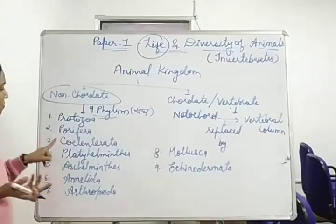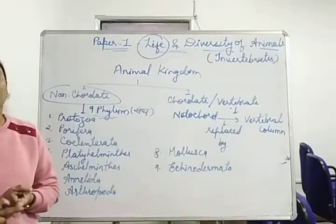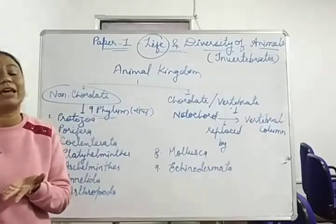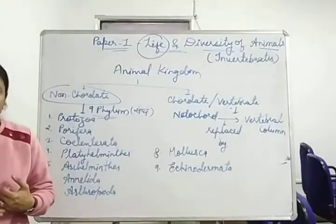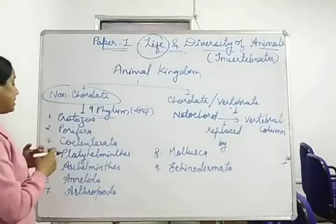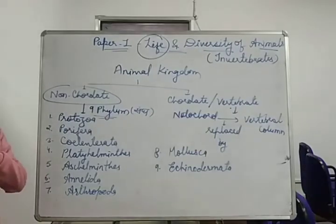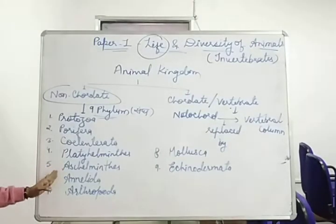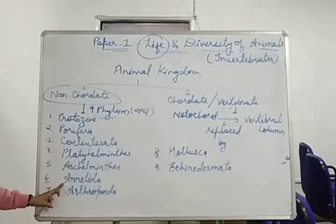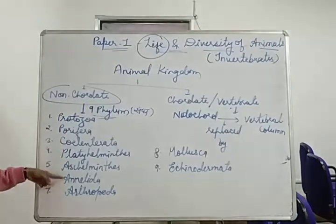Then Platyhelminthes — these animals are known as flatworms. Under Platyhelminthes come liver fluke, Taenia solium, and Planaria. Here we see that organs start to form. Then Aschelminthes — under this comes Ascaris.